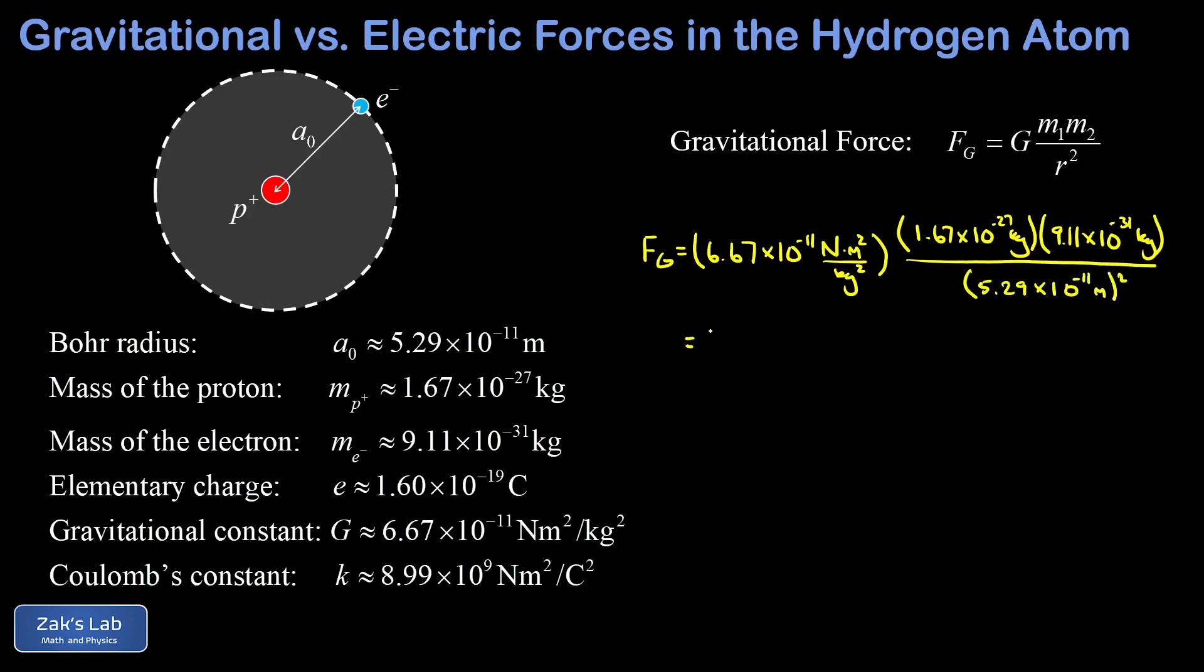And I went ahead and kept units on all those numbers so we can see how the cancellations occur. However, I have two factors of kilograms in this denominator, and then a factor of kilograms here for the mass of the proton and here for the mass of the electron.